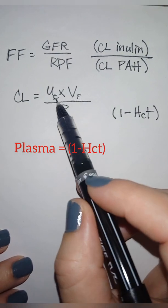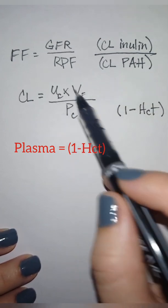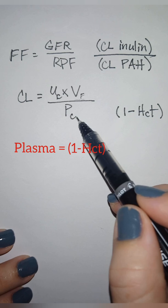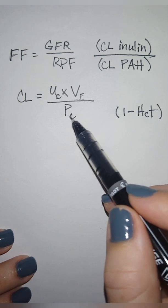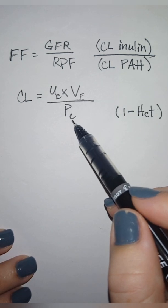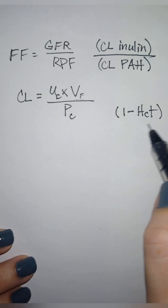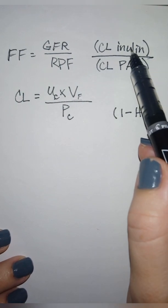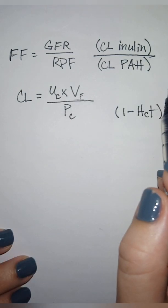You would be putting the concentration of PAH times the urinary flow over the plasma concentration of PAH. If they don't give you the plasma concentration of PAH, you're going to put one minus hematocrit, which they will give you. So if they give you the clearances, just plug that in, forget the rest.